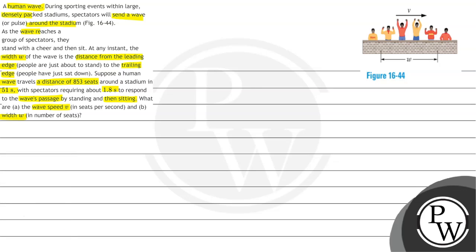So in this question we have said that the human wave is being made in sporting events. If there is a wave generated which is covering 853 seats in 51 seconds and the spectator has 1.8 seconds to respond, we have to tell how much the wave speed is and how much the width is.